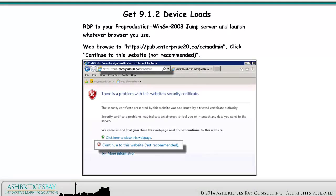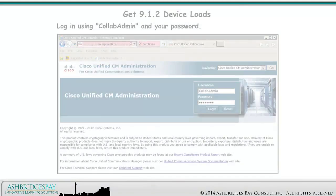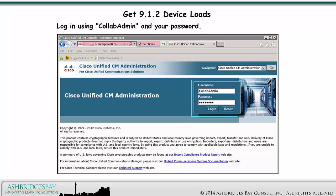RDP to your pre-production Windows Server 2008 Jump Server and launch whatever browser you use. Web browse to this address. Ignore the security warning and click Continue to this website. Log in using Collab Admin and your password.